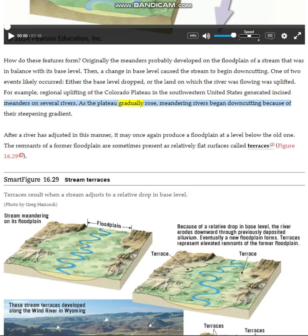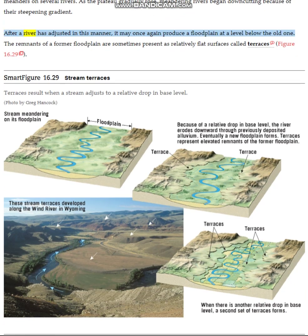As the plateau gradually rose, meandering rivers began downcutting because of their steepening gradient. After a river has adjusted in this manner, it may once again produce a floodplain at a level below the old one.